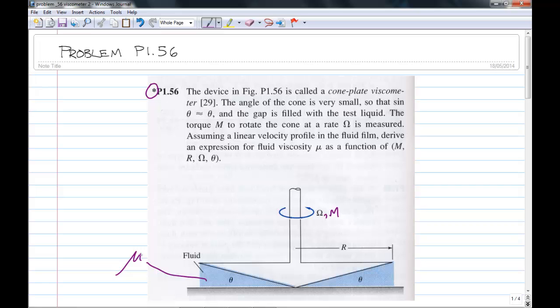So assuming a linear profile, as the problem says, a linear profile from the fixed surface to the cone, derive an expression for the fluid viscosity as a function of the torque M, the total outer radius of the cone R, the angular velocity omega, and the angle theta, where the fluid is trapped between the solid surface and the cone.